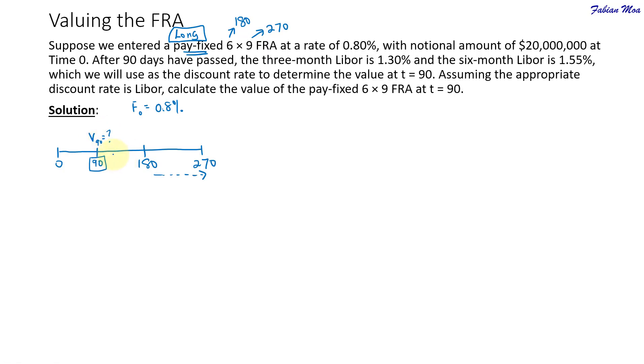To solve this, we will need to find out what is the forward rate based on the LIBOR on day 90. What we have been given here is that on day 90, the three-month LIBOR is 1.3% and the six-month LIBOR from 90 days is 1.55%.